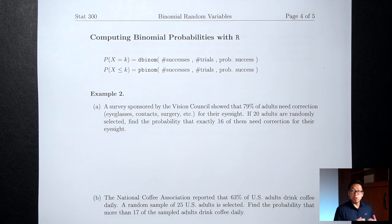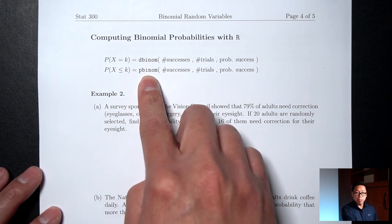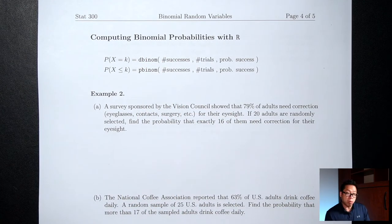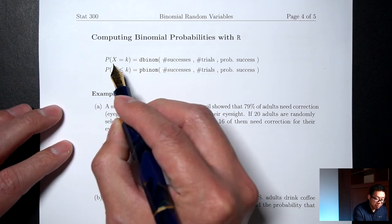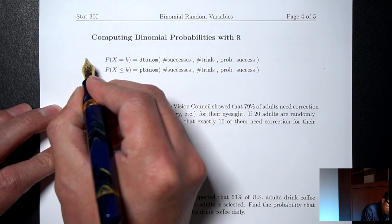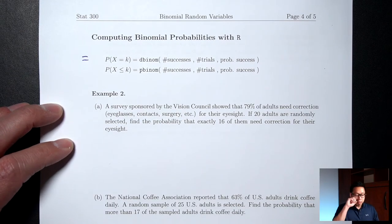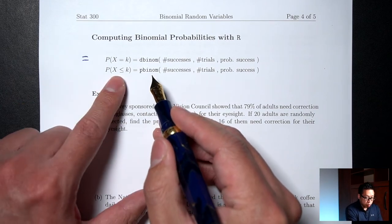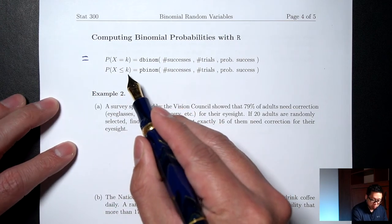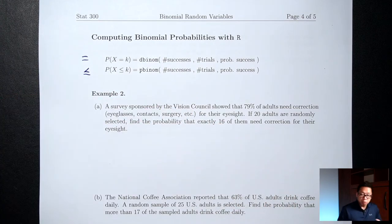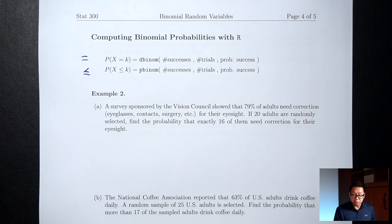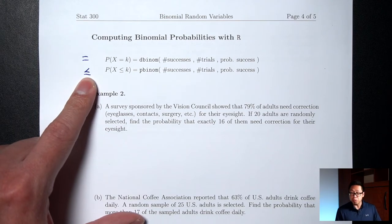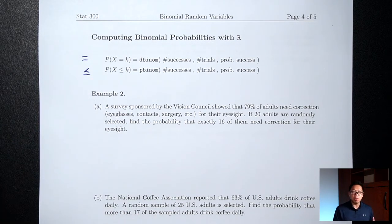We're going to use R to help us find binomial probabilities. The two commands we'll need are dbinom and pbinom. dbinom is for situations where we're looking for the probability of X exactly equal to something. pbinom is for situations where we're looking for the probability of X less than or equal to something. Those are the two situations R handles directly. For other situations — greater than, or strict less than — we'll need to make a small adjustment.